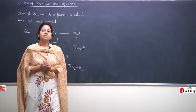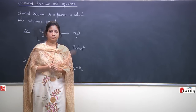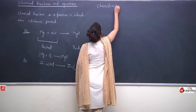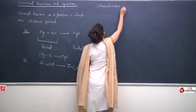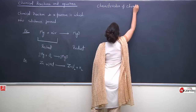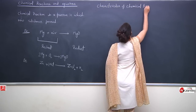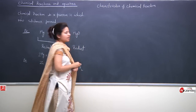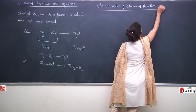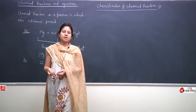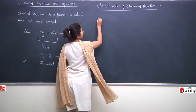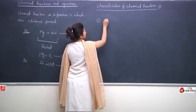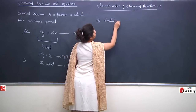Now we will talk about the characteristics of chemical reactions — which characteristics can there be? How do we recognize that a chemical reaction is happening? First, let's talk about the evolution of gas — you can observe gas being produced in some chemical reactions.